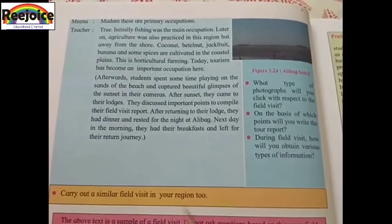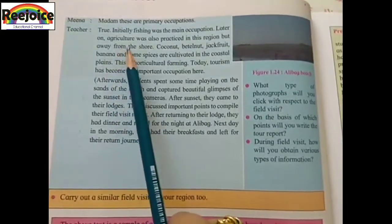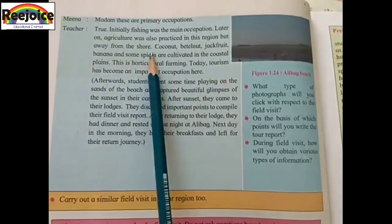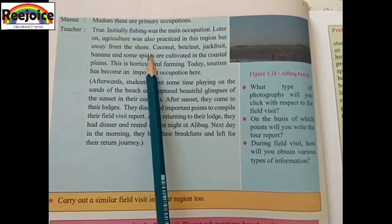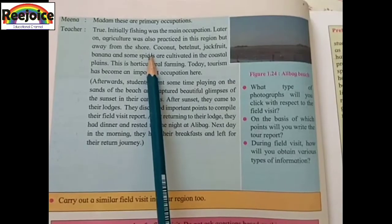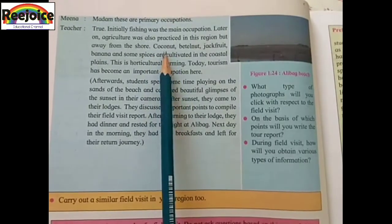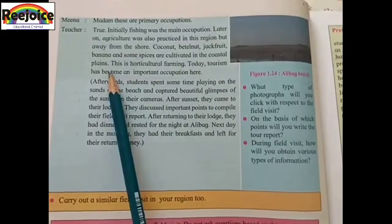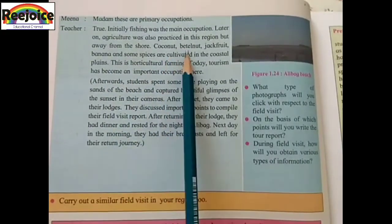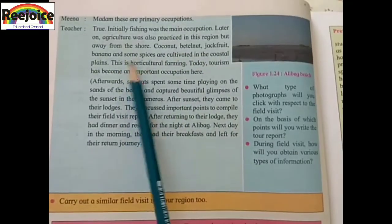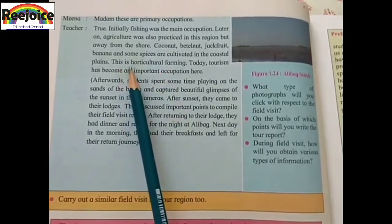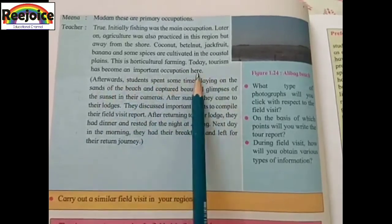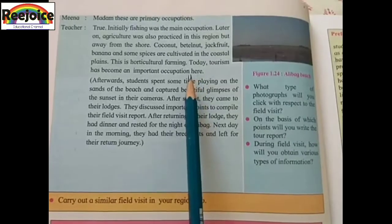These are primary occupations. The teacher says, initially fishing was the main occupation. Later, agriculture was also practiced in this region, away from the shore. Coconut, betel nuts, jackfruit, banana and some spices are cultivated in the coastal plains — this is horticulture farming. Today, tourism has also become an important occupation here, with many tourists visiting the region.